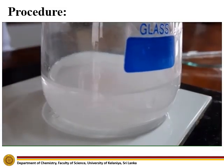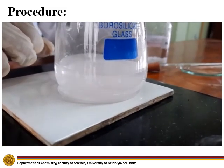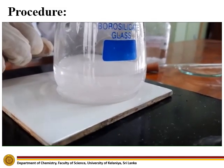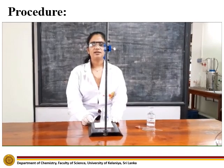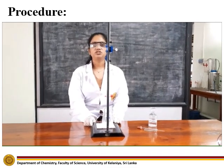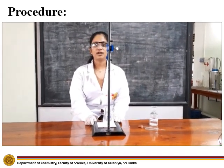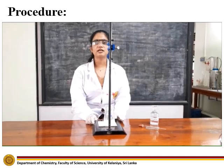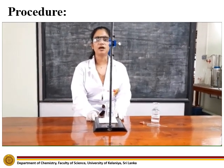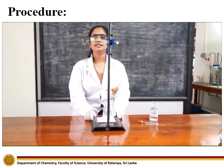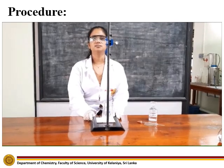This is the end point of the titration. Now let's titrate 25 ml of saturated calcium hydroxide solution prepared from 0.05M sodium hydroxide solution against HCl to obtain burette readings.